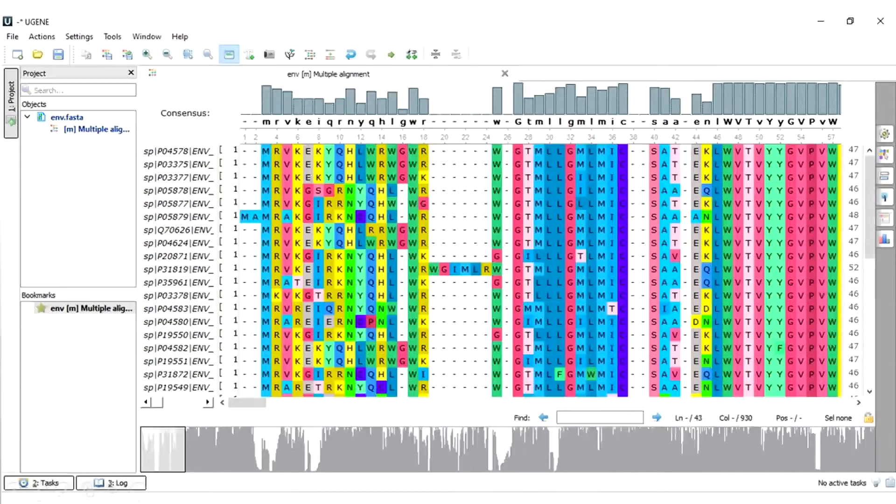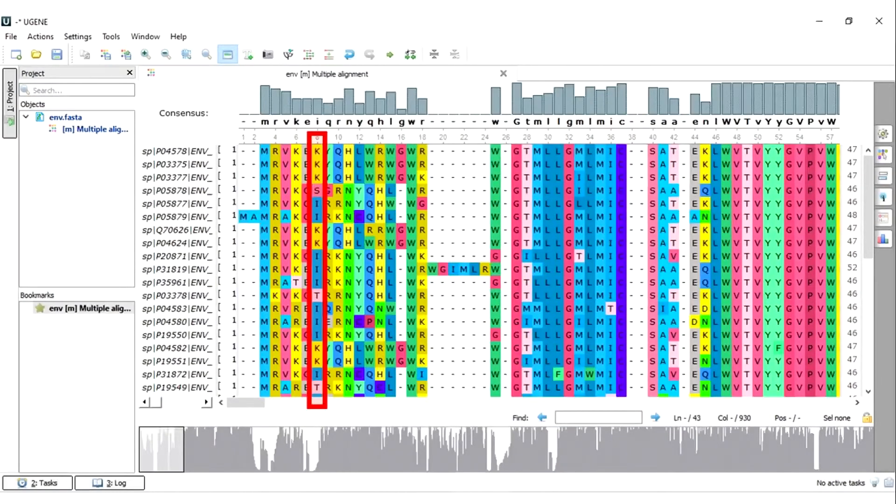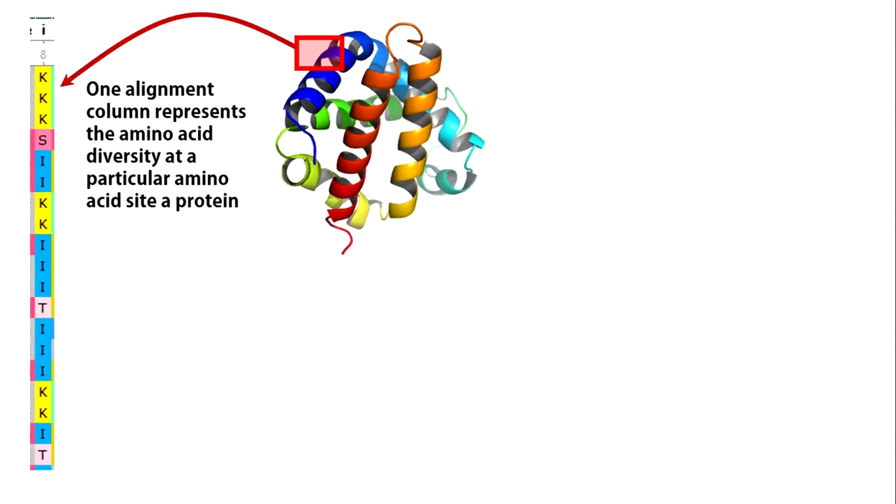This is a multiple sequence alignment of the envelope glycoprotein sequences from different HIV virus strains. Let us think about one column of this multiple alignment. This column. What does this column represent? Well, all HIV strains exhibit the envelope glycoprotein and this one alignment column represents amino acid variations in a single residue site of this envelope glycoprotein.